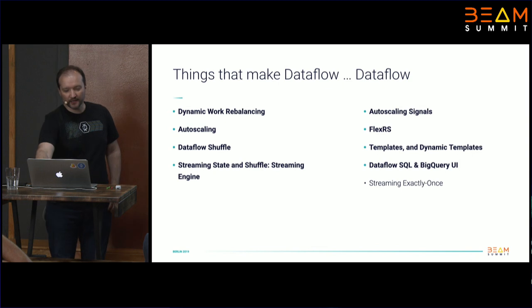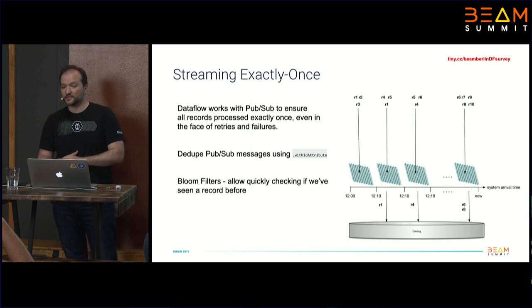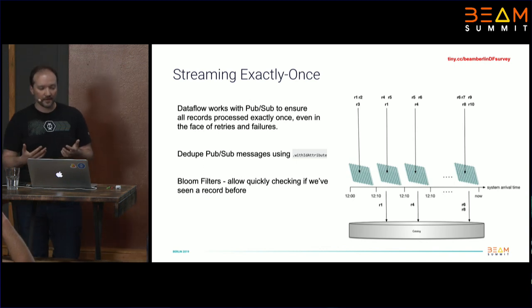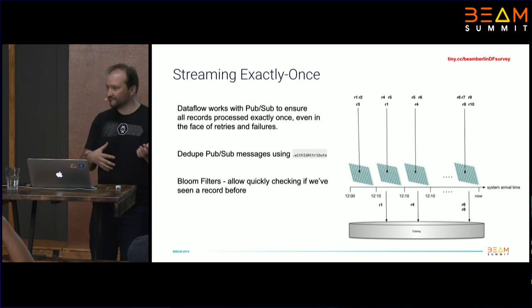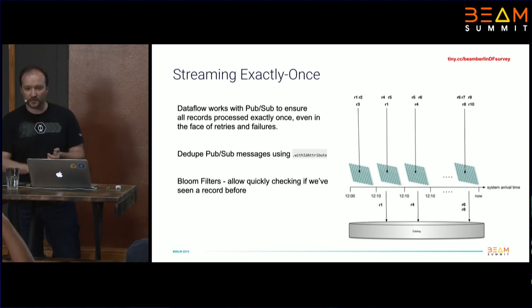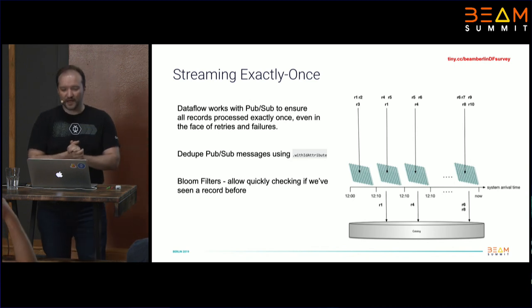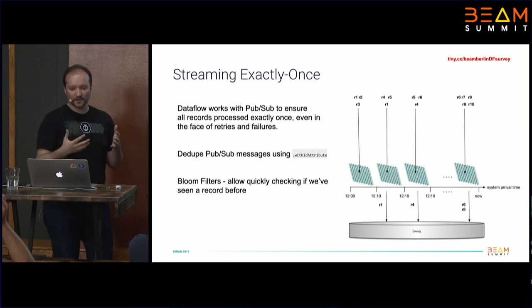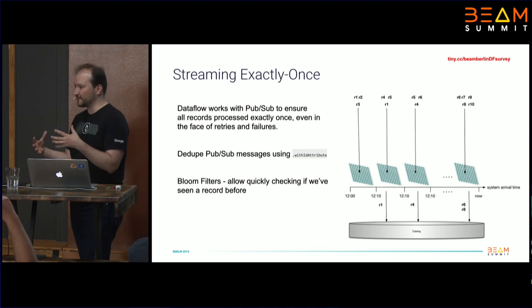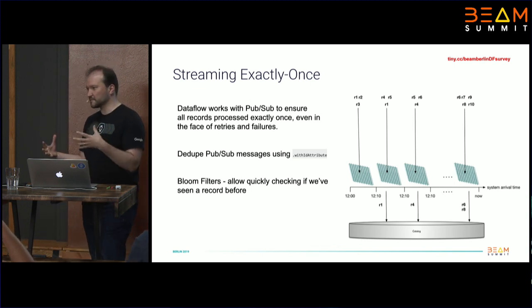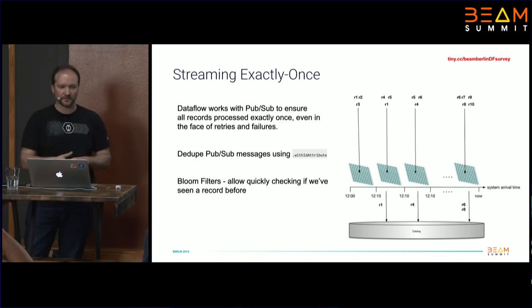Last but not least, let me mention streaming exactly once. This is an important concept in streaming. Dataflow guarantees processing your data elements not more than once — exactly once. We have handling mechanisms for errors and retries, and we work together with PubSub to deliver and process messages just once. To achieve exactly once, you would most likely use the PubSub IO with ID attribute — you specify the ID. Internally, we use concepts such as bloom filters to validate and check if we already processed a particular data element by ID.